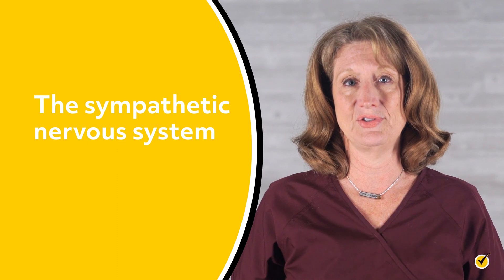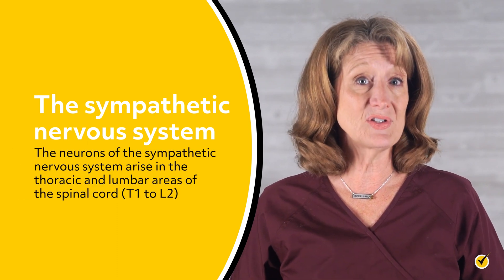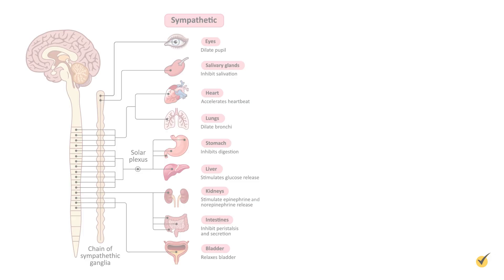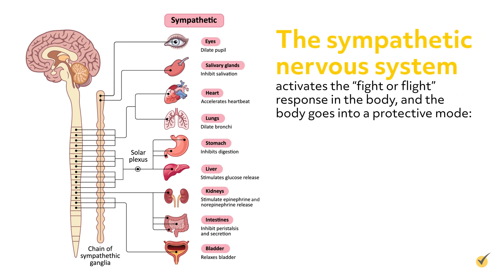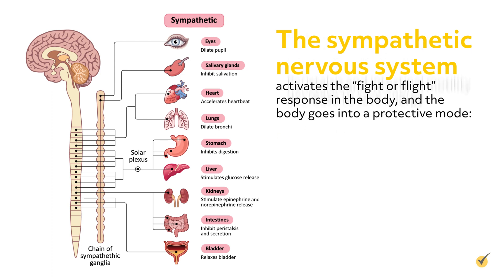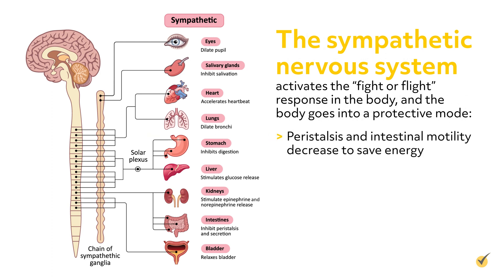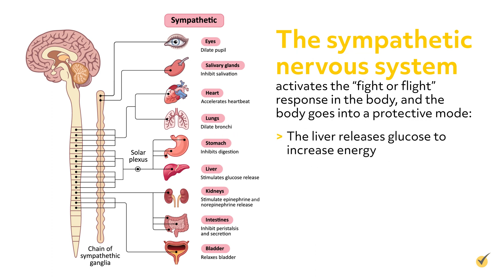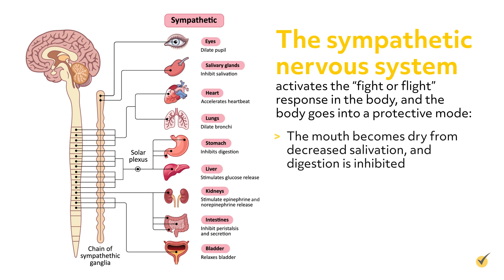The neurons of the sympathetic nervous system arise in the thoracic and lumbar areas of the spinal cord, T1 to L2. The sympathetic nervous system activates the fight-or-flight response in the body, and the body goes into a protective mode. The bladder contracts, the eyes dilate, and the heartbeat increases. Peristalsis and intestinal motility decrease to save energy. The kidneys secrete less urine and stimulate the release of norepinephrine and epinephrine. The liver releases glucose to increase energy. The bronchi in the lungs dilate to increase the oxygen supply, and the mouth becomes dry from decreased salivation and digestion is inhibited.